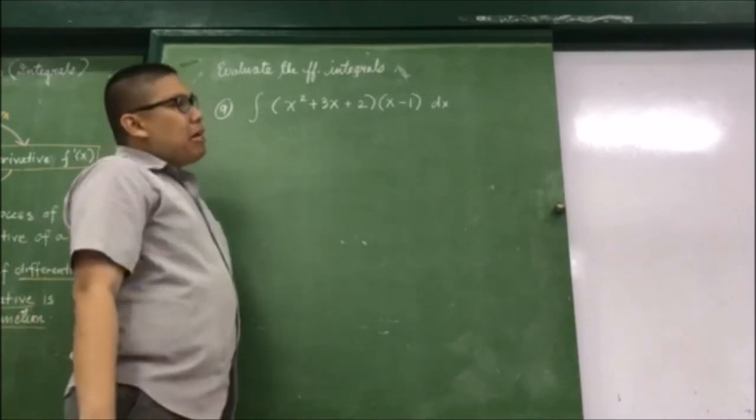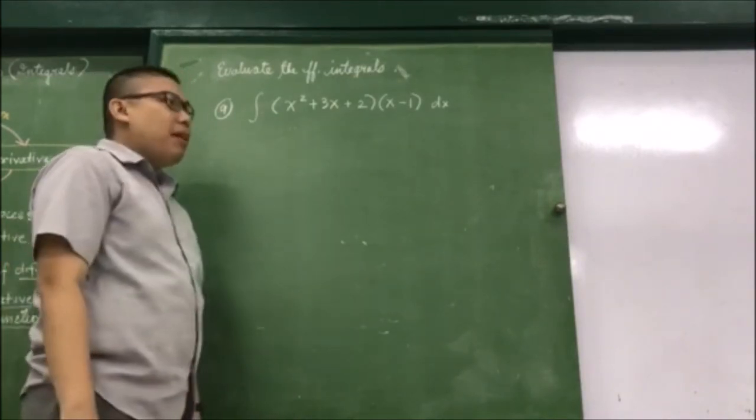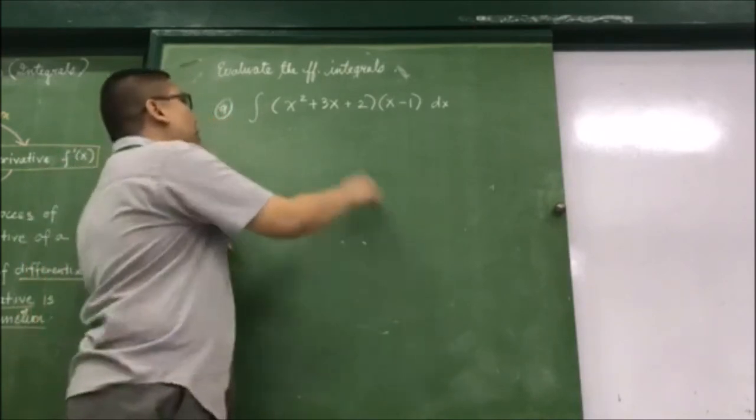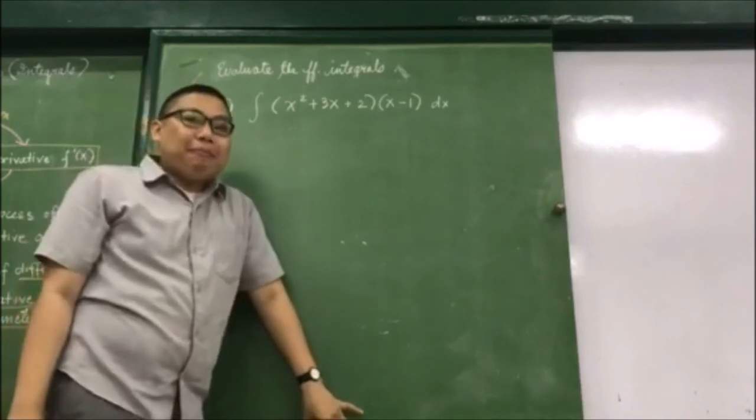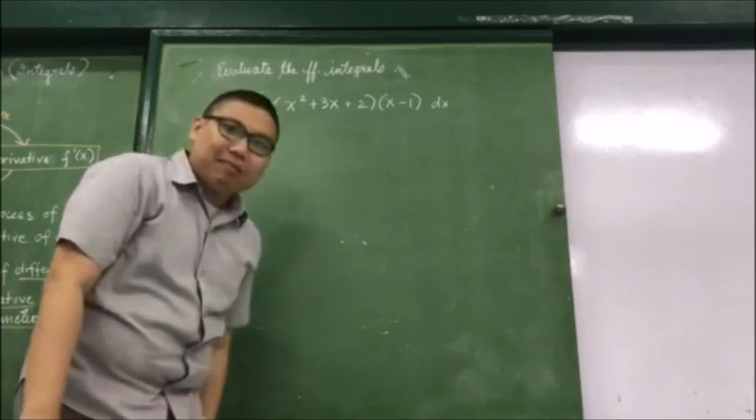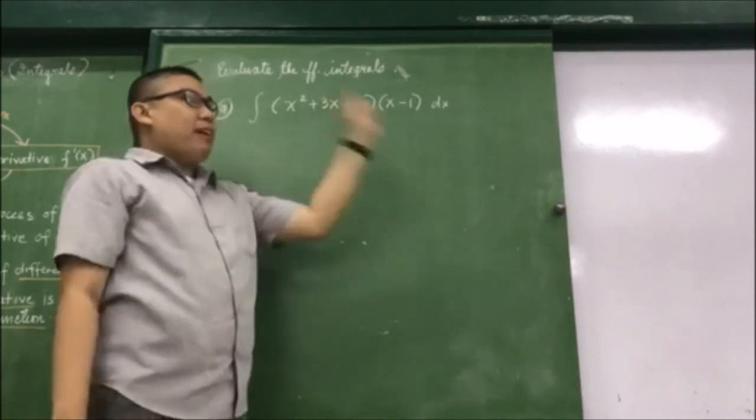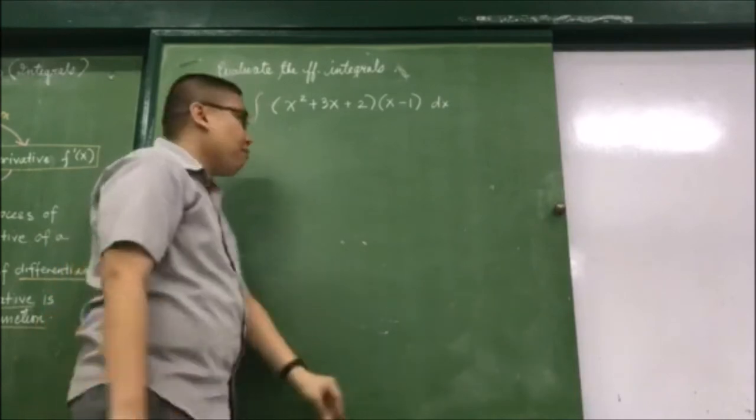But when we look at our formulas, we don't have any direct formula or rules that will fit this scenario of item number 9, which is the product of factors. So what will you do with this? In order for you to apply directly the antiderivative formulas, what happens?